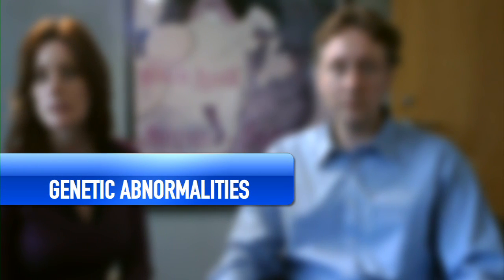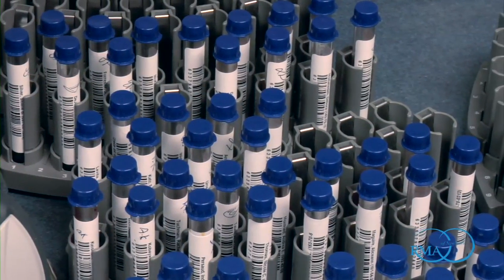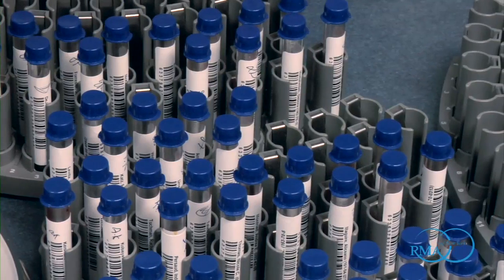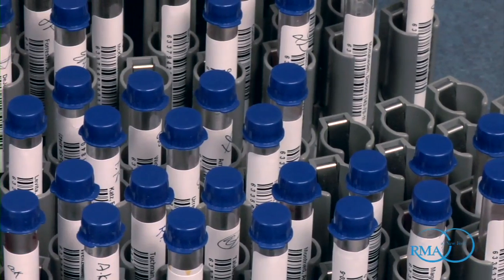Certainly obtaining karyotype or genetic information on both partners is going to be very important. We know that patients that have karyotypical abnormalities or what's called balanced translocations can definitely be predisposed to have repeated miscarriages. So obtaining some blood, we do a test called a karyotype, which analyzes all chromosomes and we try to rule out the presence of a balanced translocation. If a balanced translocation is encountered, then we have to recommend for those couples to do in vitro fertilization with pre-implantation genetic diagnosis, because the tendency for them is to produce a large number of embryos that are going to be abnormal and therefore prone to be miscarried.